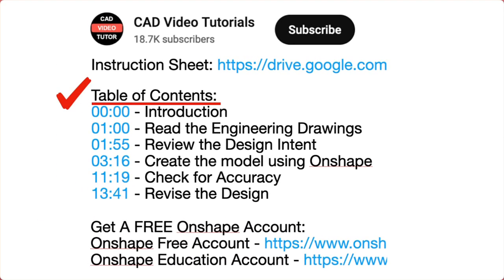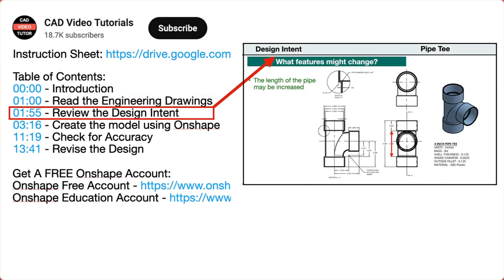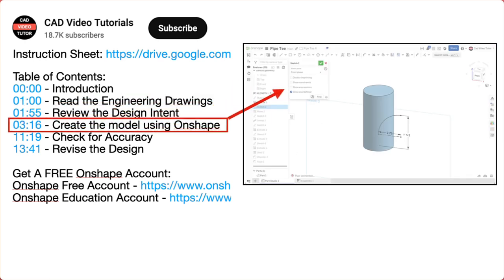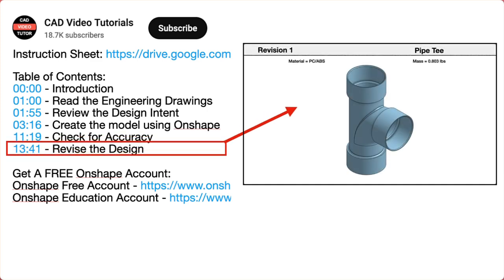There are links for each of the segments of this video. The video instruction is organized into five segments. In segment one, you will read the engineering drawings. Segment two will establish the design intent. In segment three, you will create the part model using Onshape. Next, you will check the accuracy of your model by checking its mass properties. Last, you will check the design intent by making changes to the model to see if it will update correctly.